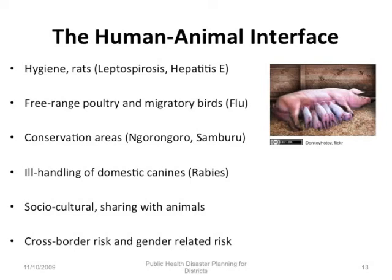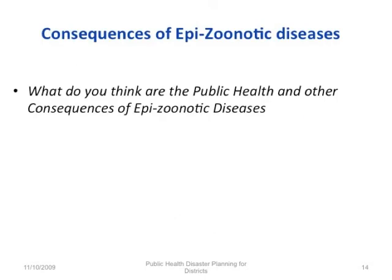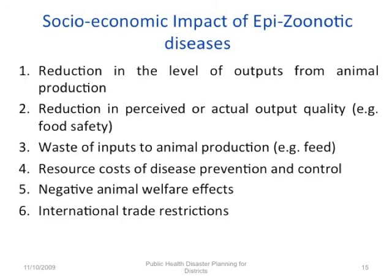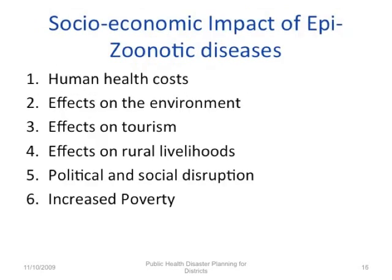The consequences of epidemic-prone zoonotic diseases include socio-economic impacts such as reduction in the level of outputs from animal production, reduction in perceived or actual output quality, waste of inputs to animal production, resource costs of disease prevention and control, negative animal welfare effects, and international trade restrictions. Additional consequences include human health costs, effects on the environment, effects on tourism, effects on rural livelihoods, political and social disruption, and increased poverty.